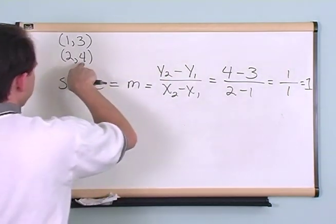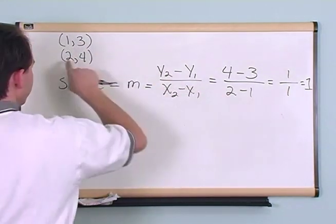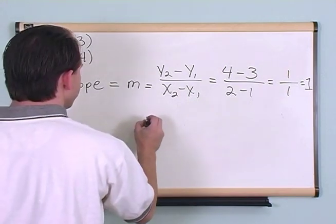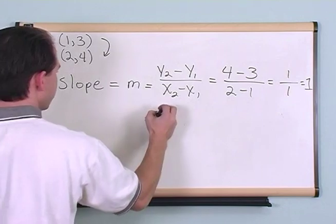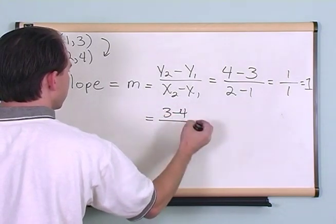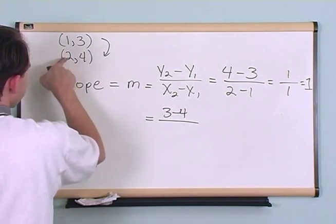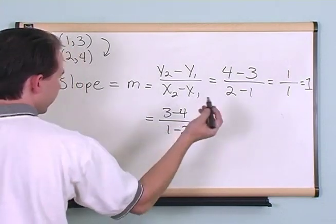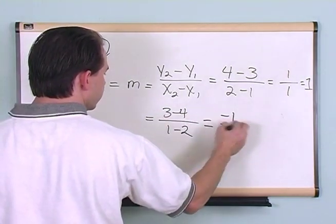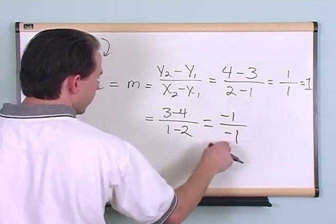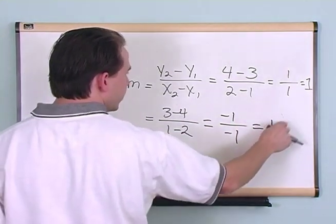Okay. In this case, we went 4 minus 3 on the top and 2 minus 1 on the bottom. You can also do it the other way, going this way. 3 minus 4, okay. And then 1 minus 2. Let's see what we get. 3 minus 4 is negative 1. 1 minus 2 is negative 1. Negative 1 divided by negative 1 is 1. You get the same value.